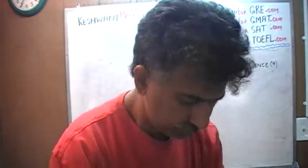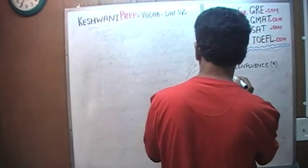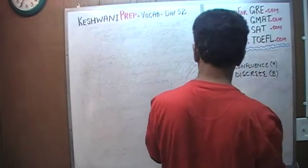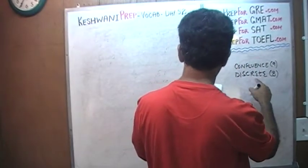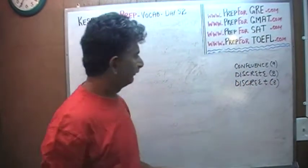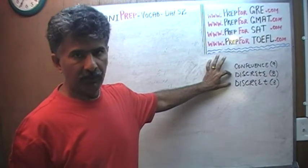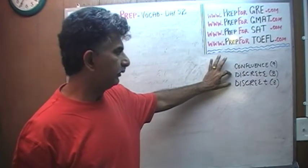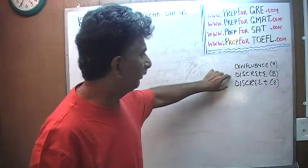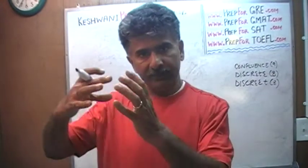Oh, there is a good word — discrete. Now don't confuse this discrete with the other 'discreet' where you take the E at the end and put it in front of the T, giving it two E's. These are two different words with two different meanings. I'm not going to go into those two words right now. If you want to learn them, just type in Keshwani-prev-vocab-day-8. Discrete simply means they are separate — a separate unit.